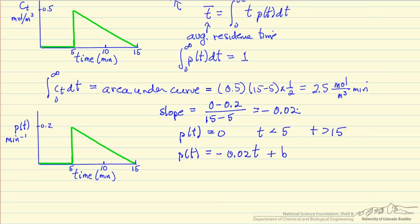Now the intercept, we can calculate. The easiest way is to say when t equals 15, p of t equals 0, which means that b is equal to 0.30.